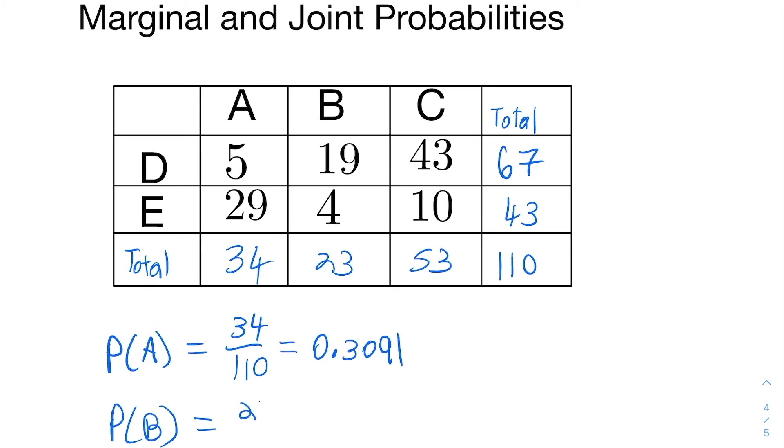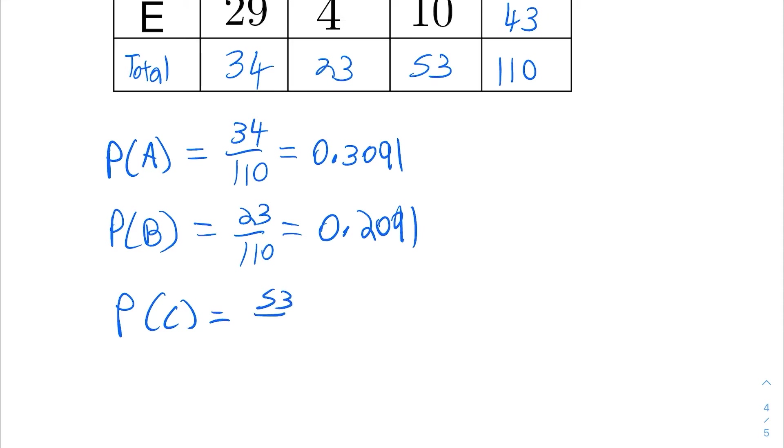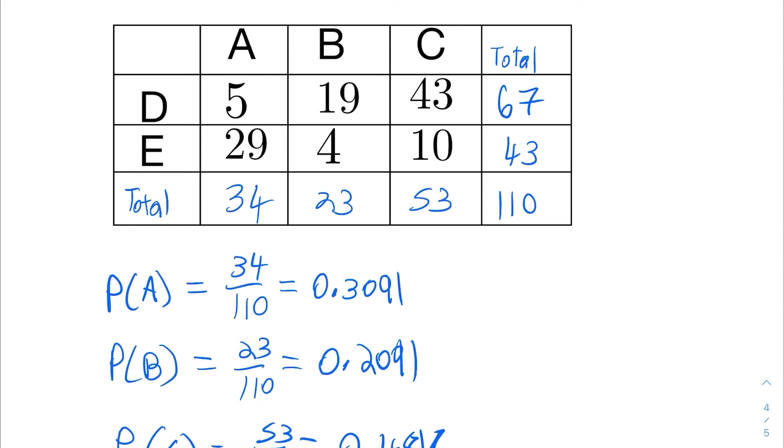And then you have some other marginal probabilities. For instance, the probability of B then would just be 23 over 110. And the probability of C would be 53 over 110. And those would be the marginal probability for the columns. And then the rows have marginals too. The probability for D would be 67 over 110. And the marginal probability of E would be 43 over 110. And those would be the marginal probabilities, coming from taking these numbers in the margins and dividing them by the grand total.